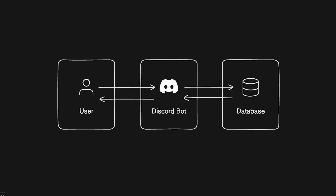First let's take a look at a bot without a caching layer. In this example we have users over at Discord sending a request to our Discord bot — think of this as our Node.js server. The Node.js server fetches data from a database and sends it back to the user. This is fine if your bot is small, but if it's receiving a ton of requests or having to fetch the same data repeatedly, it can get pretty slow because your database is getting a ton of requests.